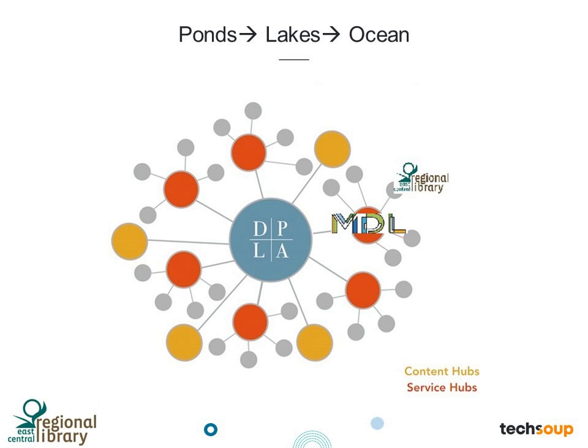This is one of my favorite visuals that the Digital Public Library of America uses to explain the service hub relationship. Your public library is a pond with local unique materials — East Central Regional Library sends content upstream to the lakes, which are the service hubs. In our case, it's the Minnesota Digital Library, which pulls data from cultural institutions across their state or region. Those service hubs then feed content through the rivers to the ocean, which is the Digital Public Library of America. Our service hub is the Minnesota Digital Library.